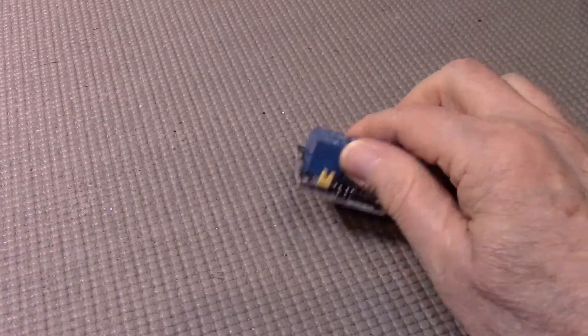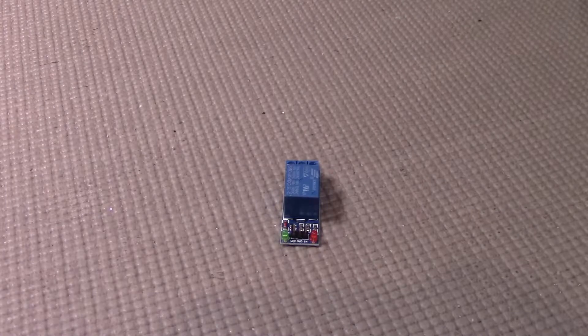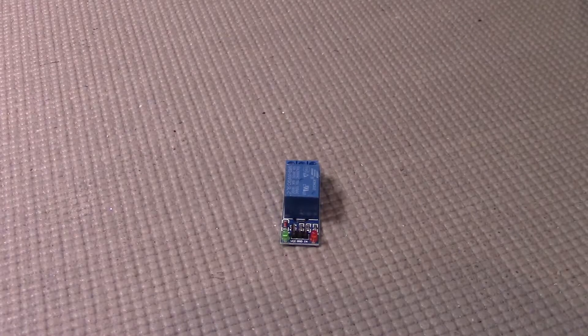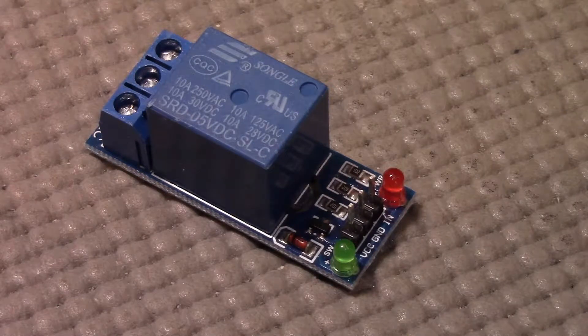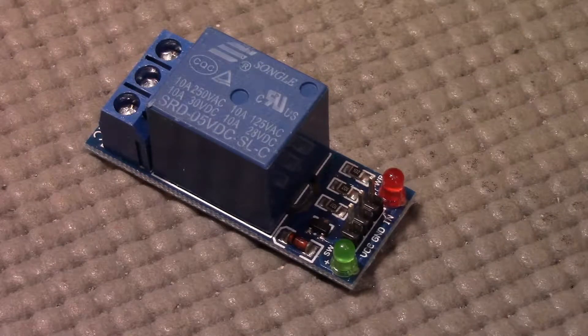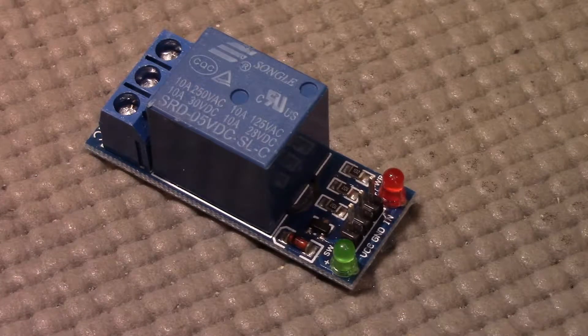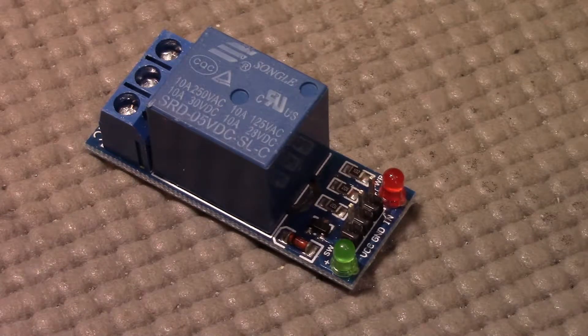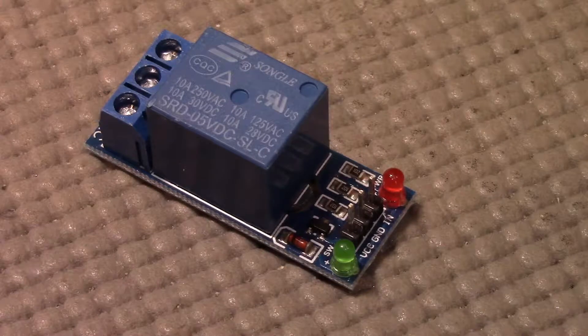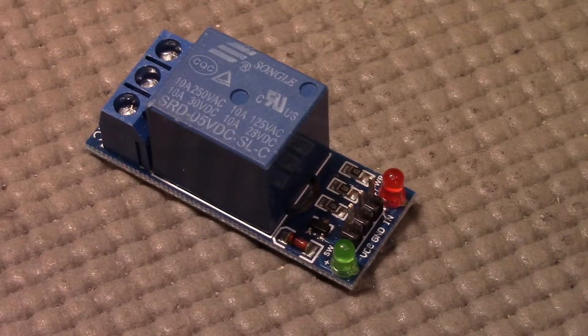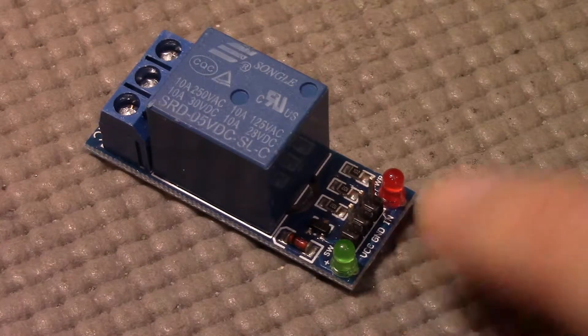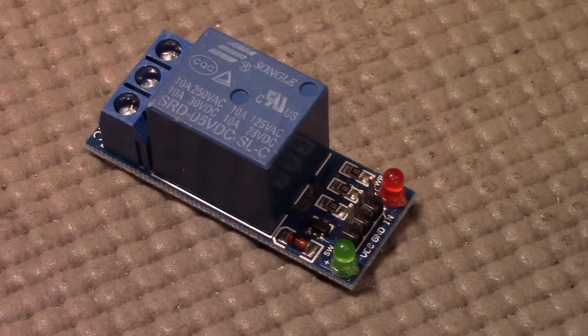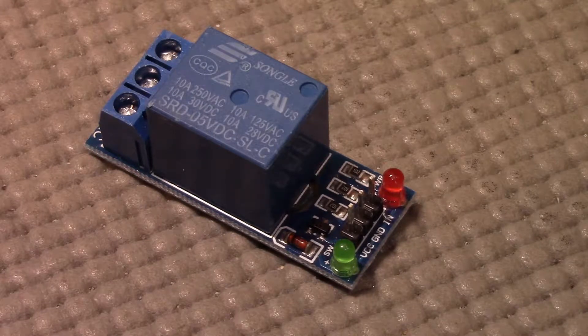Sometimes, relays can be found on boards that contain rather large diodes. For this relay, we see there are three pins on the input side or the Arduino side, and they're labeled VCC, ground, and in. This relay also has two large LEDs.